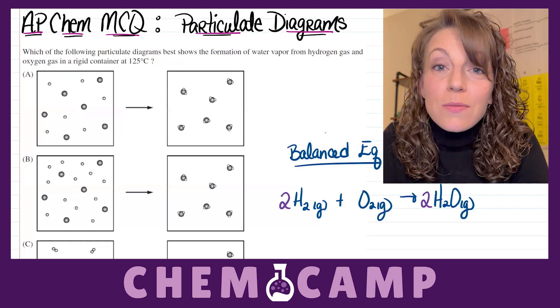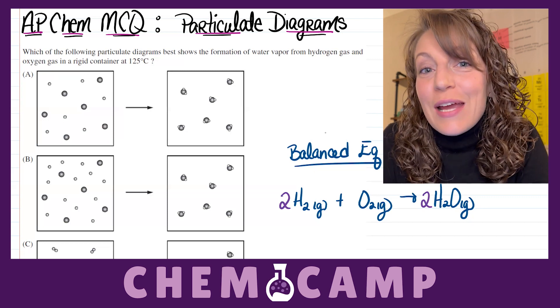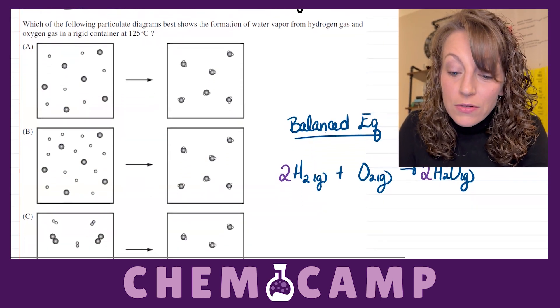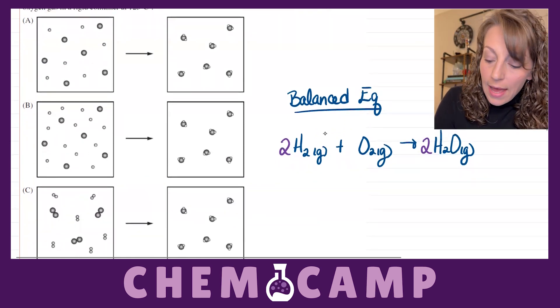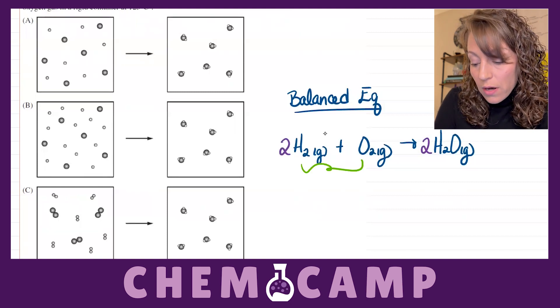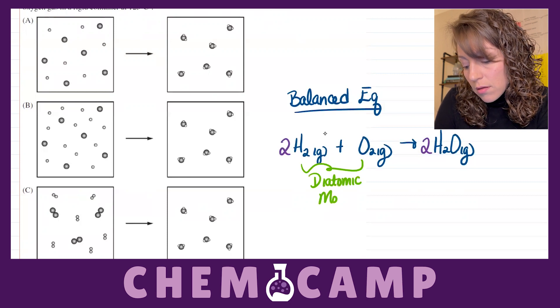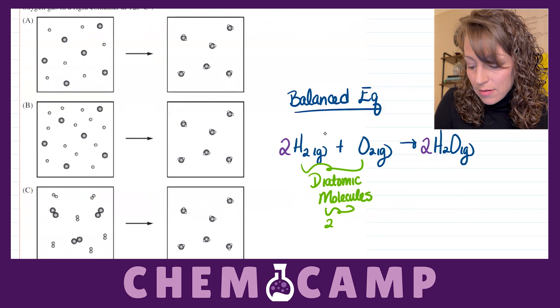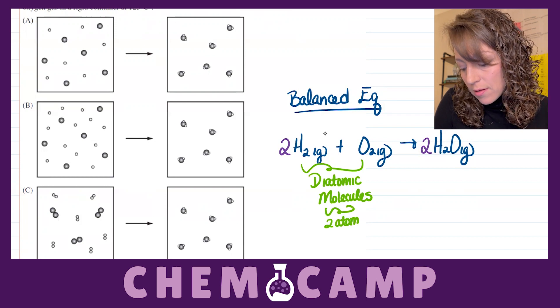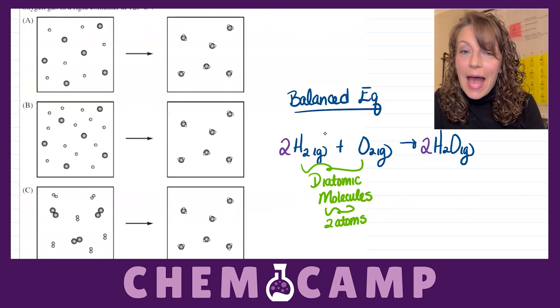And from this balanced chemical equation, we're going to pull a plethora of information to answer our question. And the very first piece of information that we can pull, we've already discussed. And it's the fact that the H2 and the O2 are those diatomic molecules, meaning that they come in a pair of two atoms. So when they're drawn in a particulate diagram, there has to be two atoms drawn.